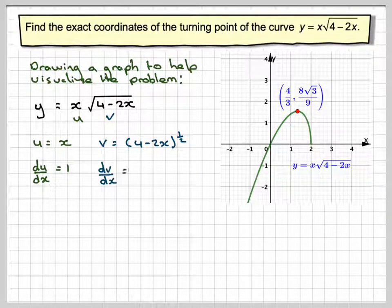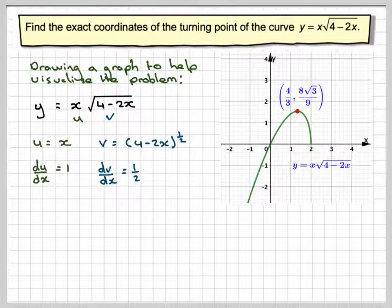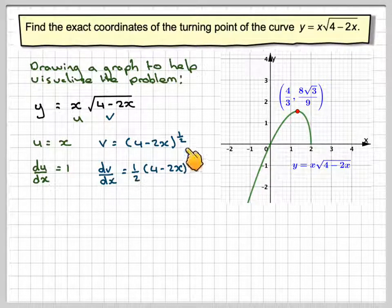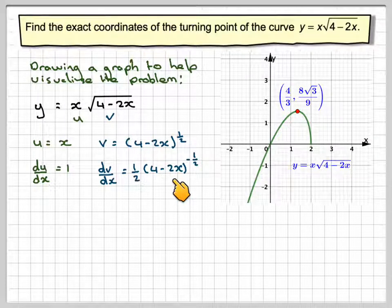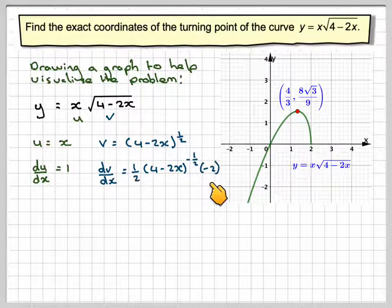If we differentiate that, we're going to have a half written down the bracket, reduce the power by 1, which is minus a half. Differentiate the bracket, which is minus 2. Don't forget the minus sign.